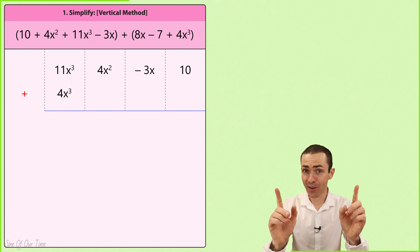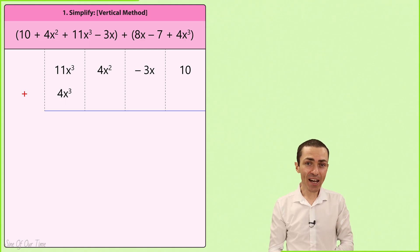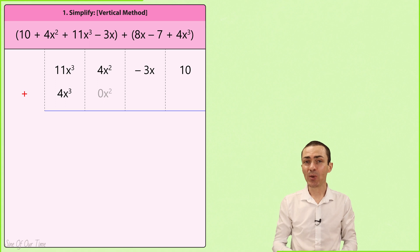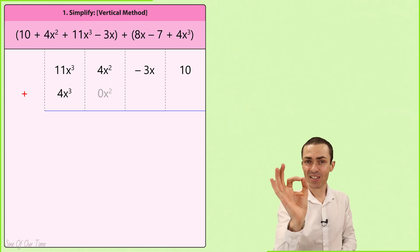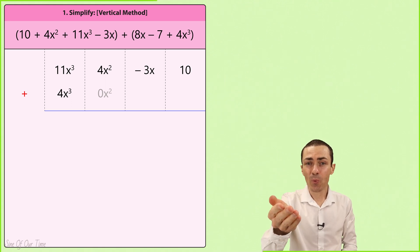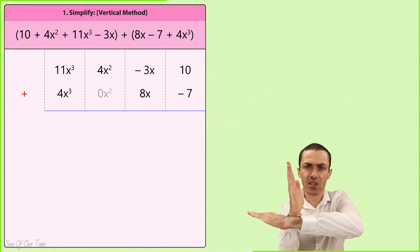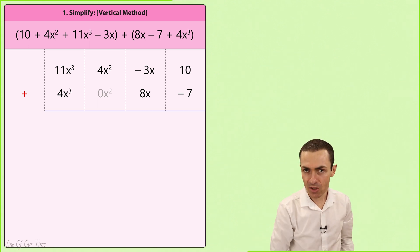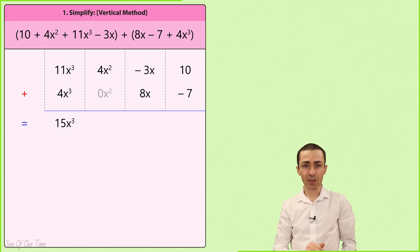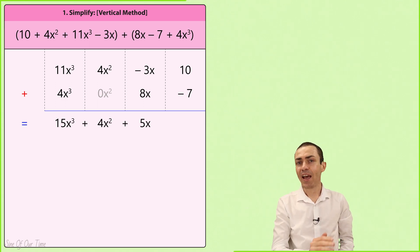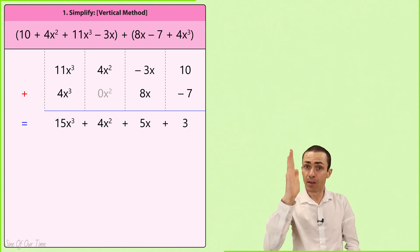You may notice that there is no term that contains an x squared, which means that we can leave the second column blank. However, if you feel like you have to put something in the second column, you can write 0x squared, which is what we call a placeholder, because it is just holding the place in the second column even though its value is zero. In the third column we write 8x and in the last column we write negative 7. To get the sum of these polynomials we simply add up the terms in each of the columns, which turns out to be 15x cubed, 4x squared, 5x, and 3. We have now simplified this polynomial by adding using the vertical method.